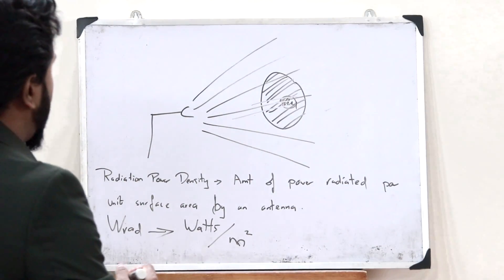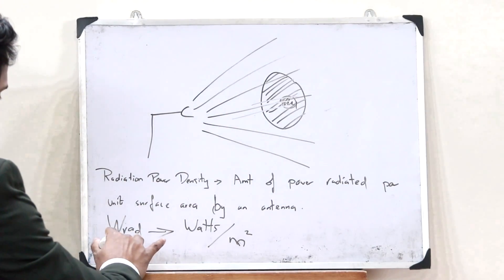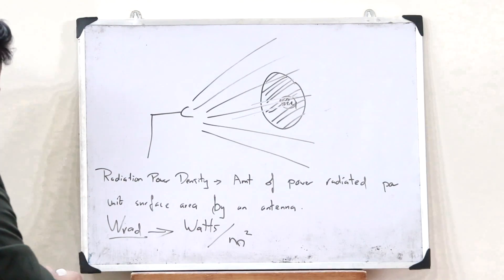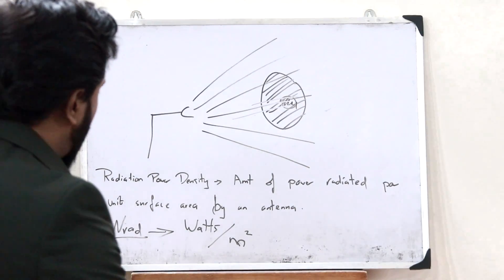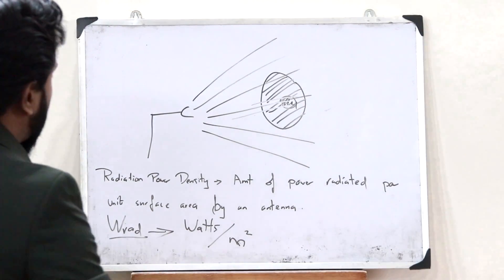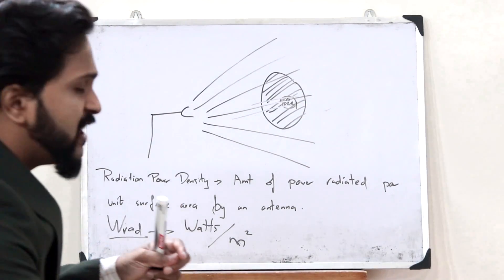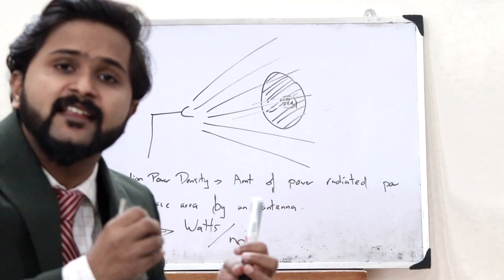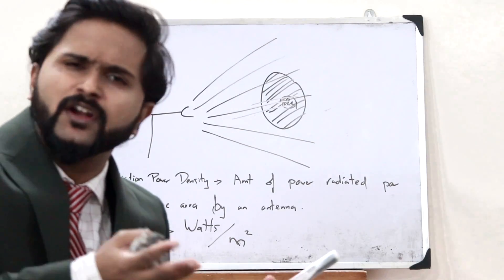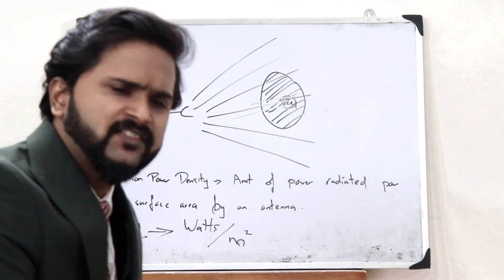Now that we know radiation power density as W_rad, next we have something referred to as radiation intensity. What is radiation intensity?